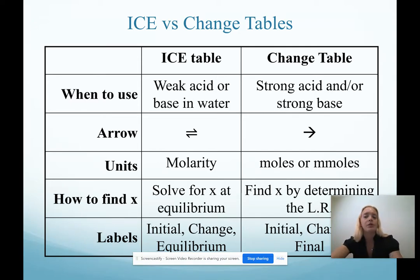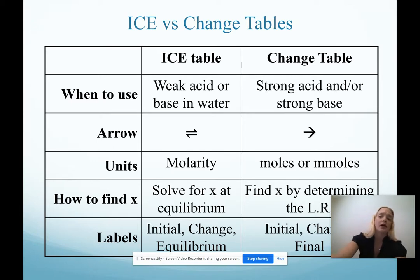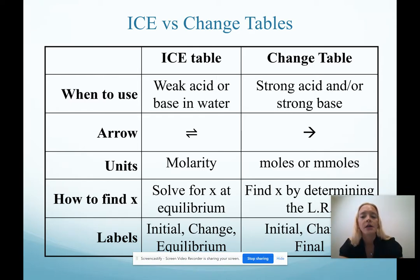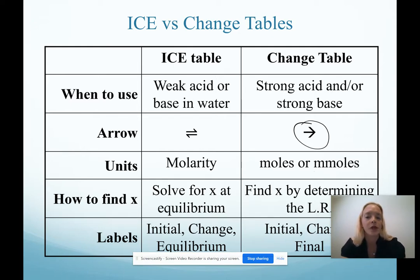For change tables, we use these if we have one or both reactants that are strong — a strong acid in water, a strong base in water, or a strong acid with a strong base. Because that reactant is strong, it forces our reaction to completion, so we have a single-direction arrow. Our table is essentially setting up stoichiometry, so we use units of moles or millimoles. We find x by determining the limiting reactant, and our labels are initial, change, and final.